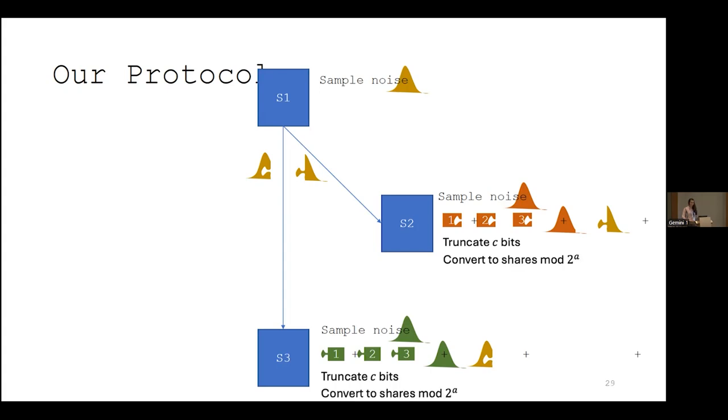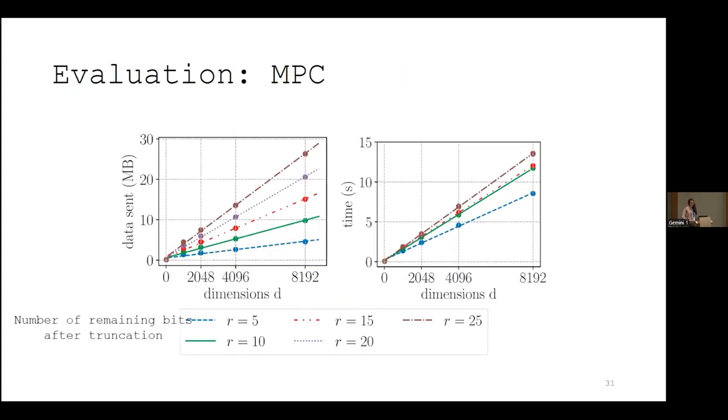Next we convert these shares to shares modulo sum power of 2 which is just a slightly different format from the integer secret shares. And we do this for the final step of the protocol where we use existing state of the art argmax and comparison protocols to compute the result. This is the most communication intensive part of the protocol so it's also what we benchmark in our evaluation of MPC here. Here we're using the MP speeds framework and three AWS instances in the same region. Here I'm reporting the communication and time while varying the number of bits remaining after truncation which here are each of these individual lines. And we see that truncating more bits like when we truncate until 5 or 10 bits remain in the blue and green lines is more communication efficient and faster. We can also see that the communication and time scales linearly with the number of dimensions.